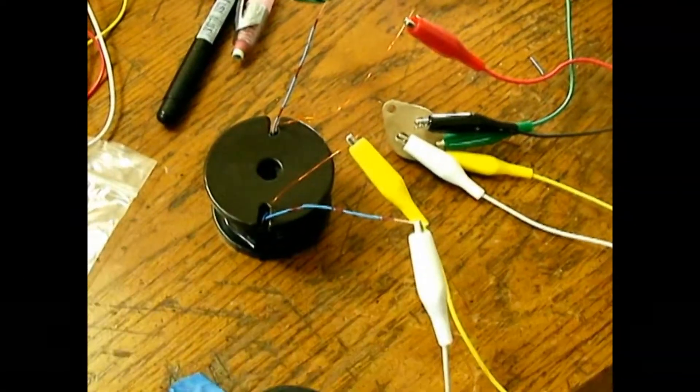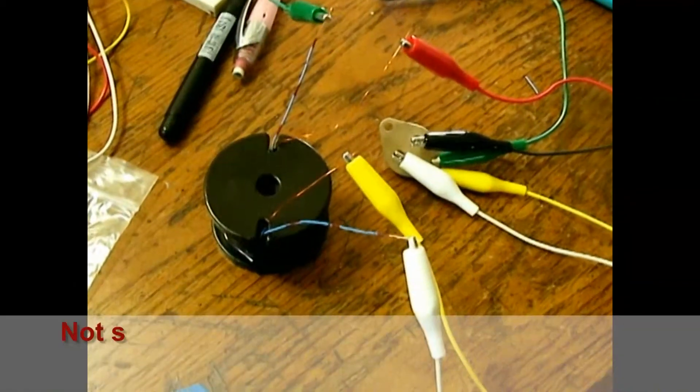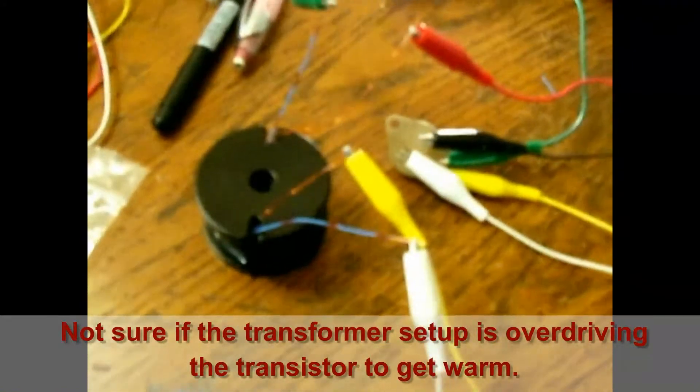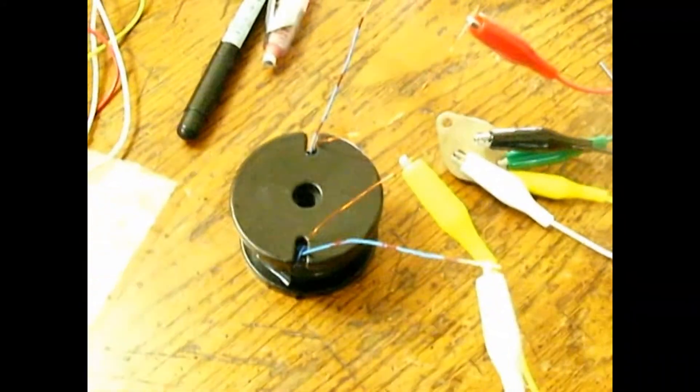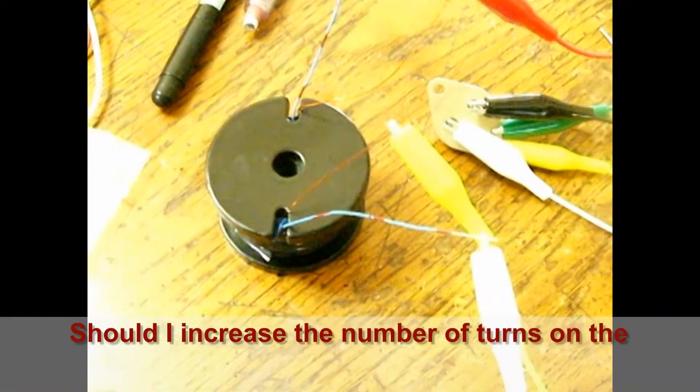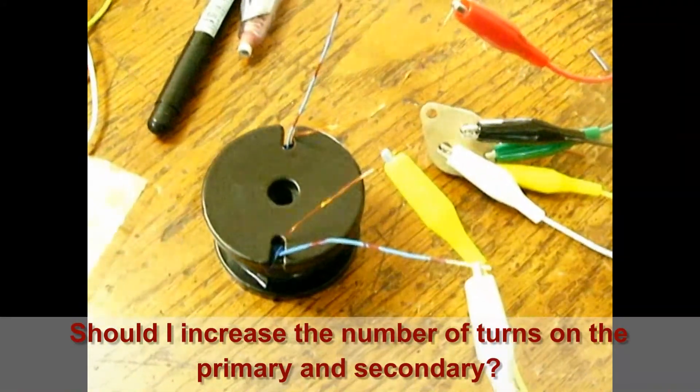rather than having a 180 millimeter ferrite core. You have a two-inch round bobbin, much like the Joule Ringer. But yeah, that is the transformer and it works